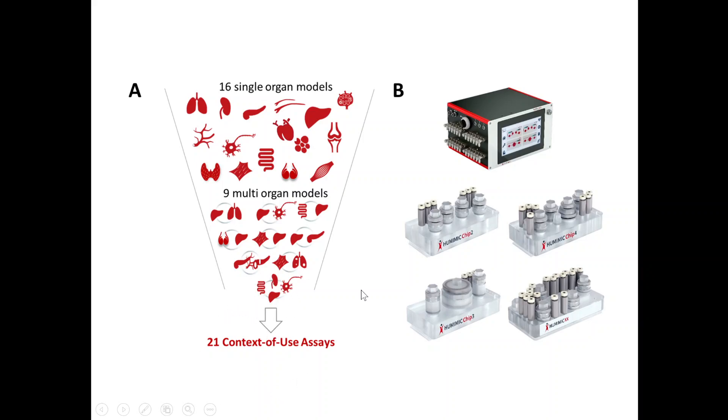Together we have more than 21 context of use assays. On the right side, you can see this is our Umimic starter. This can connect up to eight chips and here you can see the chips. So we have the Umimic chip two, which connects up to two organs. We have the Umimic chip three, which can connect up to three organs and we can also add a breathable lip, for example, for skin or lung models.